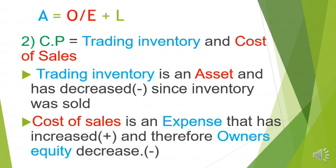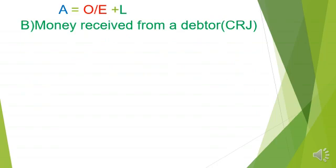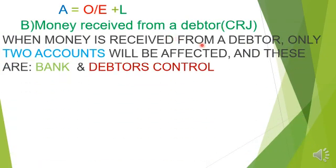So whenever goods are sold on credit, four accounts are affected — two by selling price, two by cost price. That was part A. For part B, when the customer comes to pay, the money received goes to the CRJ. When money is received from a debtor, only two accounts are affected: Bank and Debtors' Control.